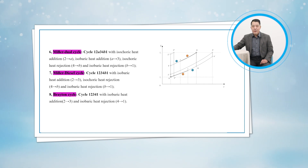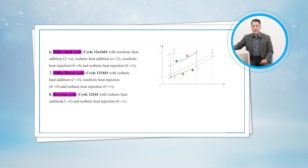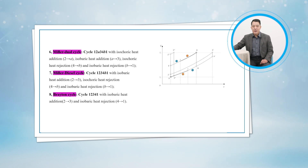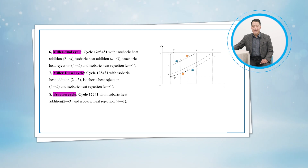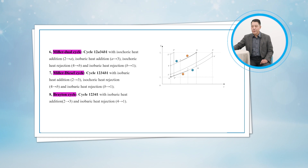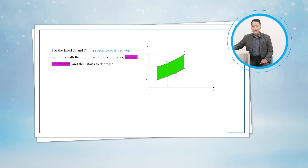The seventh one: when cycle 1-2-3-4-1 is with isobaric heat addition and isobaric heat rejection, this means in figure 10-38, state A is merged with state 2, state B is merged with state 4, and the Brayton cycle is the cycle 1-2-3-4-1.